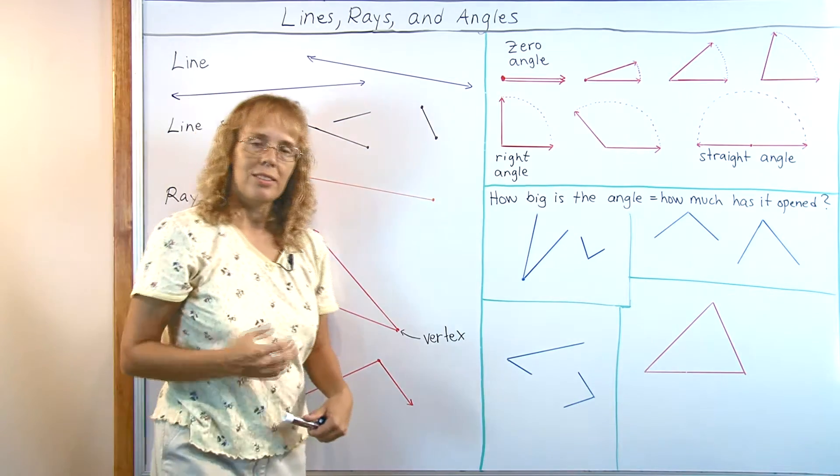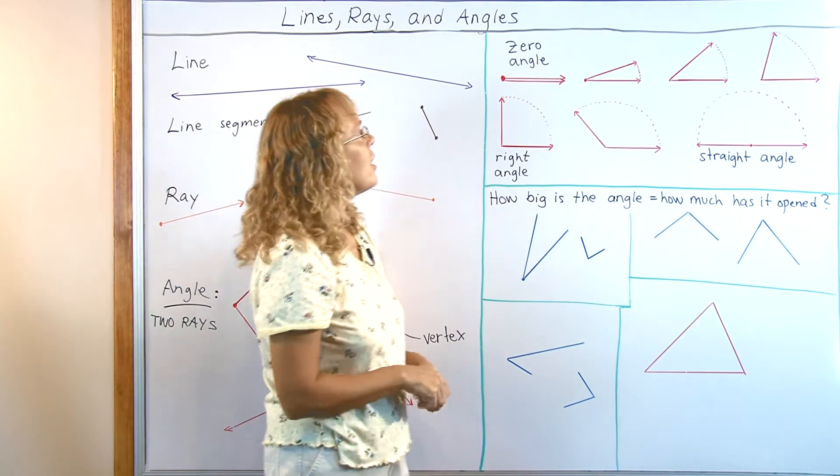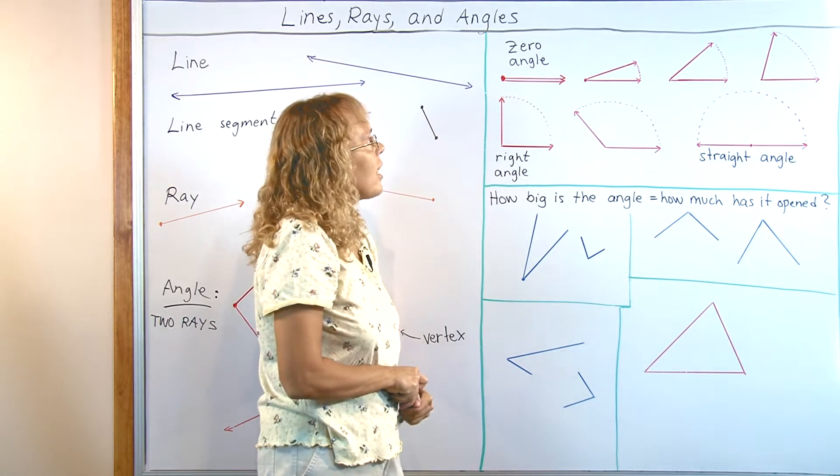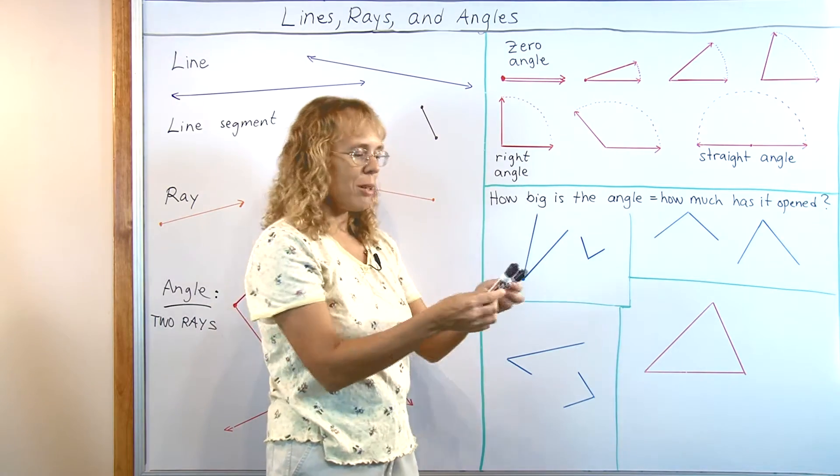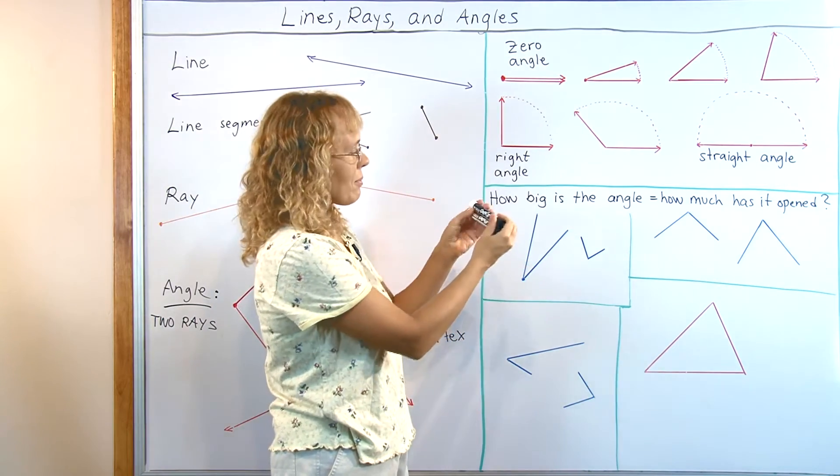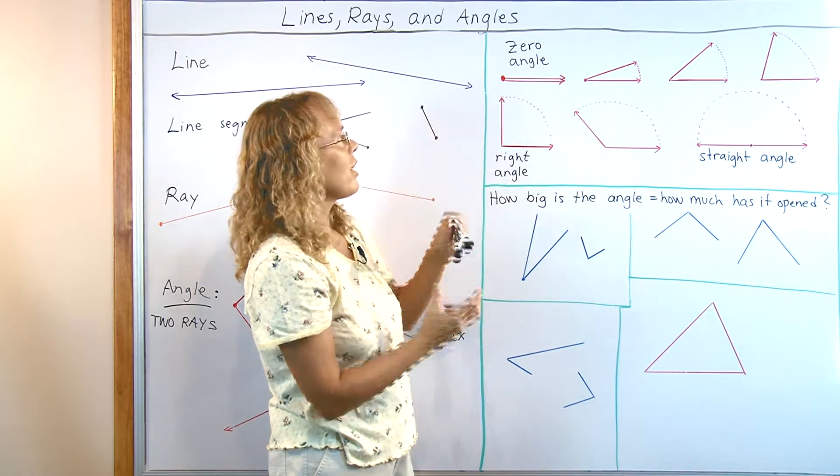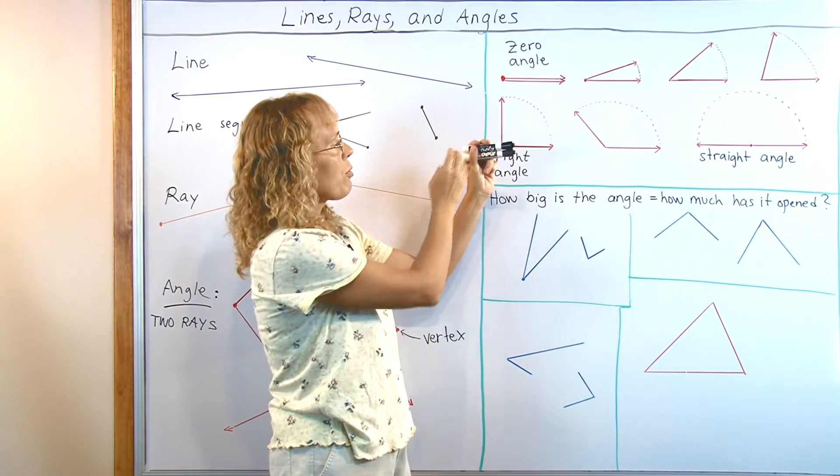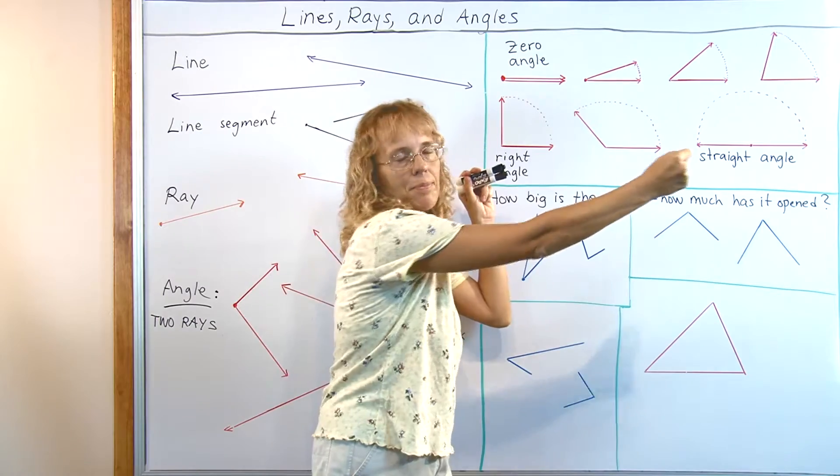Now let's look at some certain kinds of angles here. And I like to visualize angles with two pencils or two something like this. Here is my zero angle, the angle where both rays are basically the same ray.